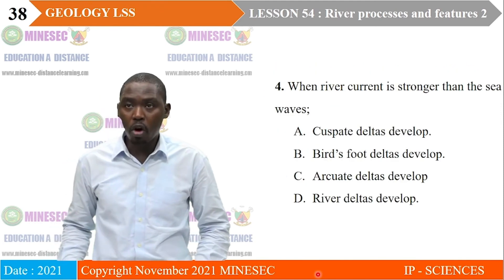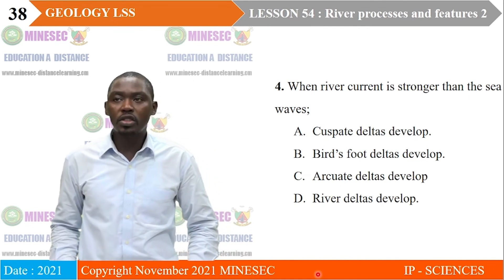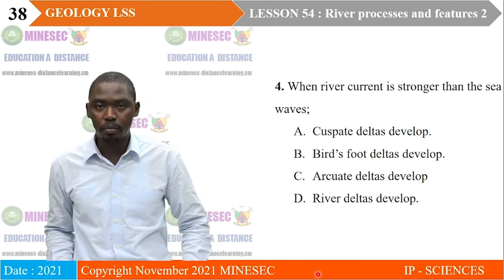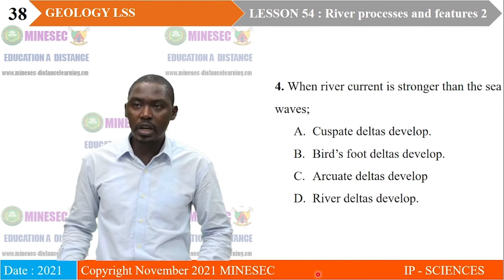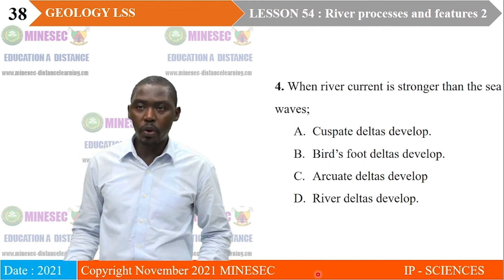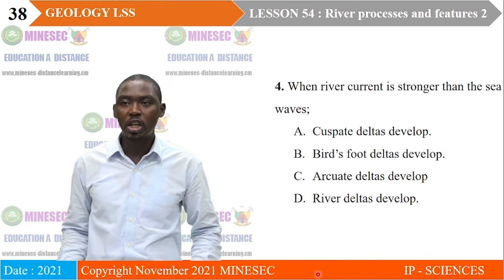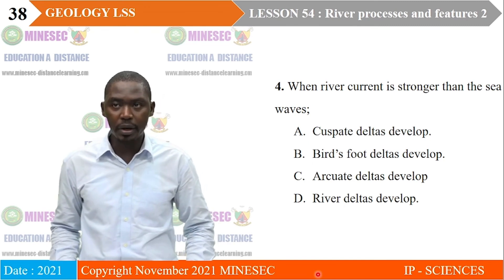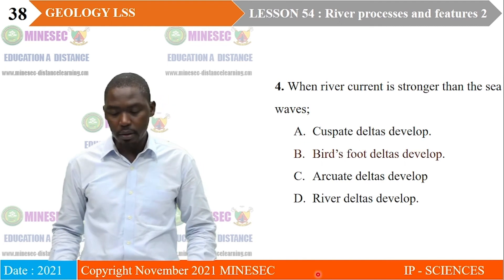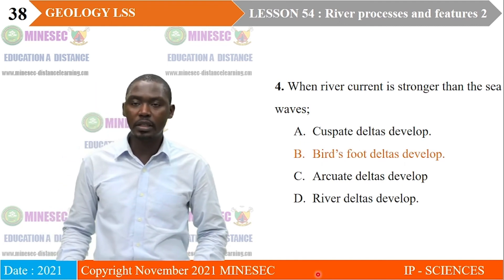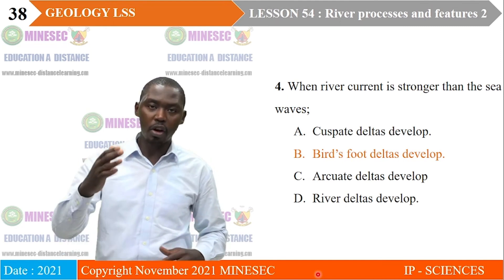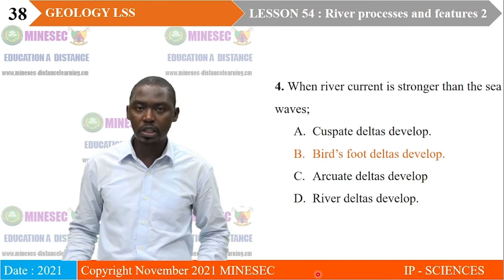Exercise four: When river current is stronger than the sea waves — A. Cuspate deltas develop, B. Bird's foot deltas develop, C. Arcuate deltas develop, D. River deltas develop. Our correct answer is B — Bird's foot deltas develop. Such deltas have the tendency of extending for a longer distance seaward since the hydrodynamic condition of the river is powerful.